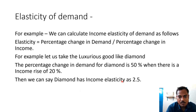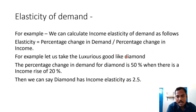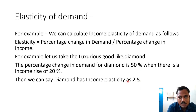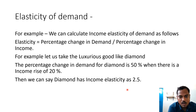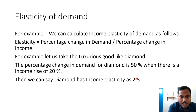The elasticity value is 2.5. What does this 2.5 mean? We can say that when there is a 1% income rise, the demand for diamond rises by 2.5%. We have a positive value of 2.5, which indicates that as income rises, the demand for diamond also rises.